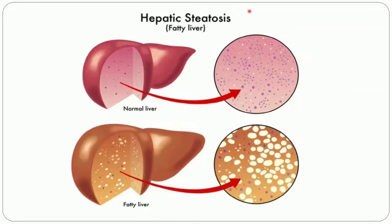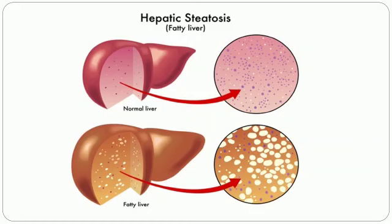Let us look at a picture of hepatic steatosis. This is a normal liver — you can see a microscopic examination of a hepatocyte. This is a fatty liver where you can see droplets of oil or triglycerides present in the hepatocytes. This is the difference between a normal hepatocyte and a hepatocyte which has oil or triglyceride deposits.